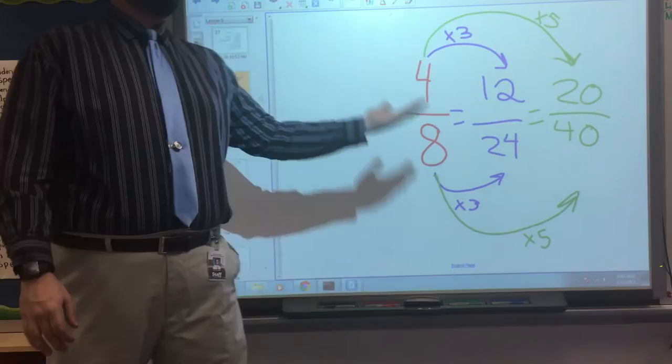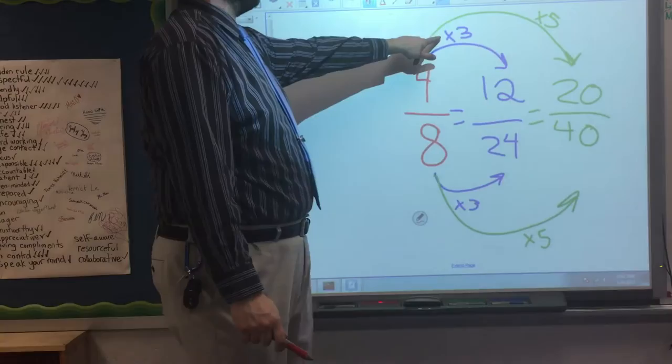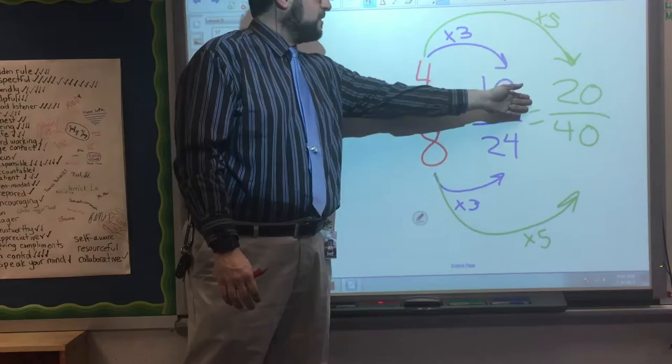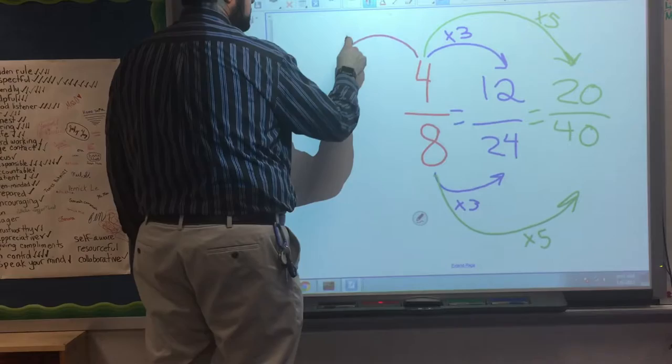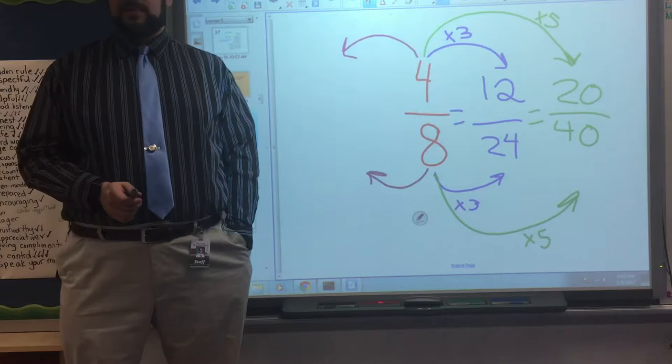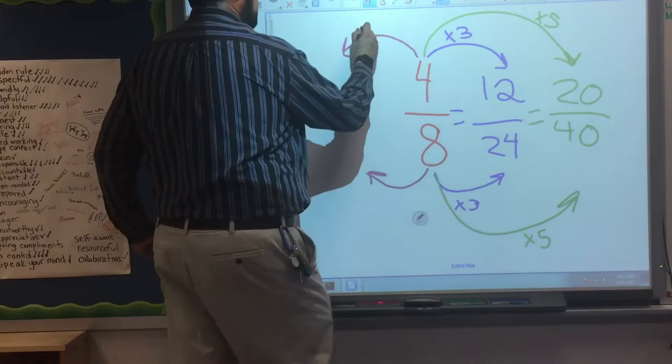We can go in the other directions too. We can go backwards. Whenever we made larger numerators and larger denominators, what operation are we using to generate our equivalent fractions? Yeah. Multiplication. That's always going to give us a larger numerator and a larger denominator. We can also generate equivalent fractions by using an opposite operation. What would that operation be if I want to generate a simpler fraction? Something that's simplified. What operation can I use instead of multiplying? I'm going to use division.